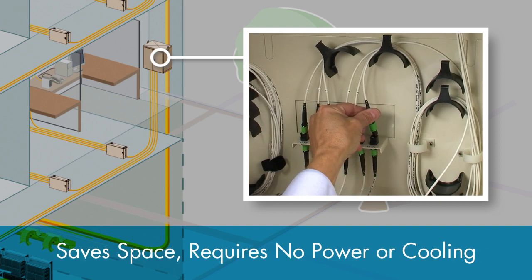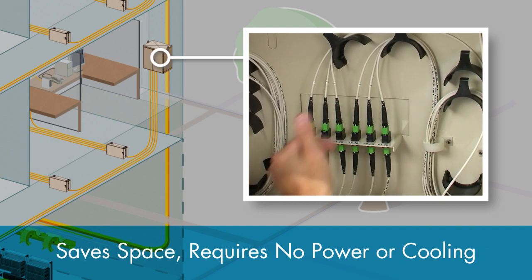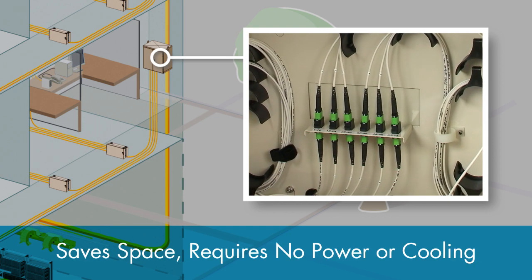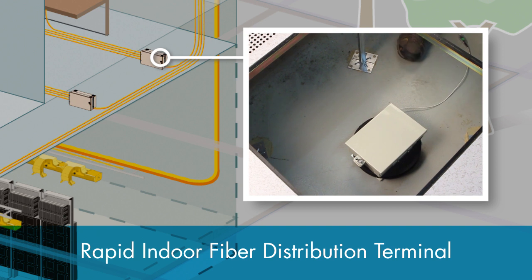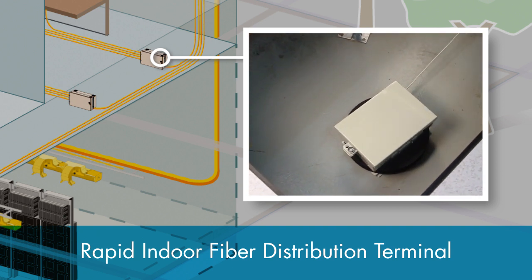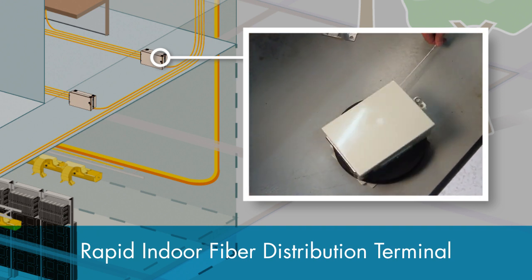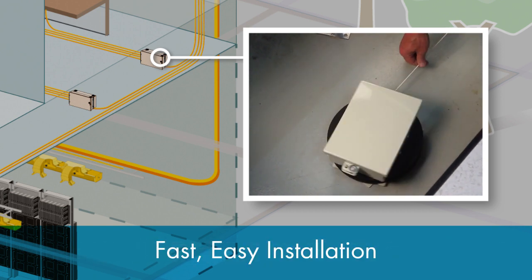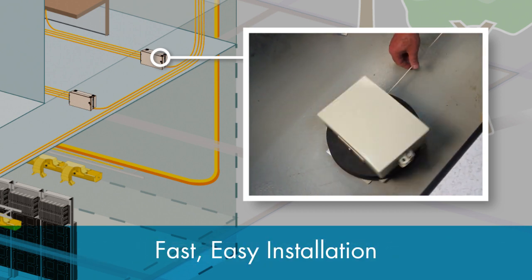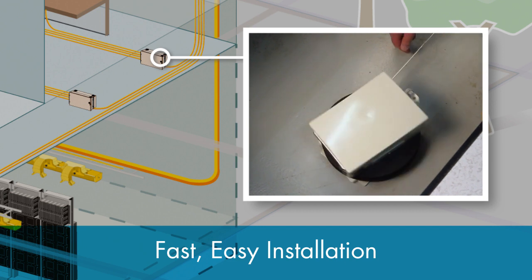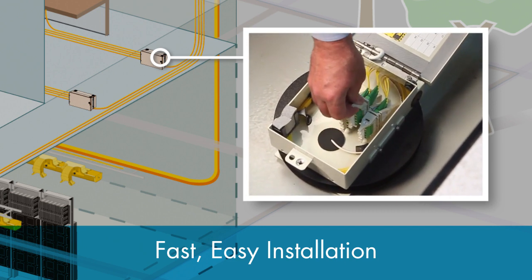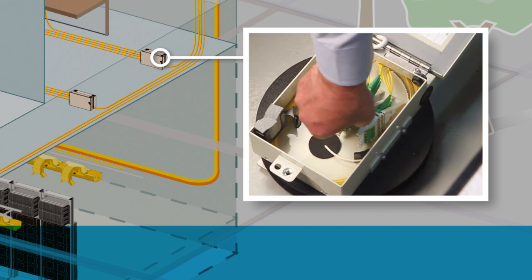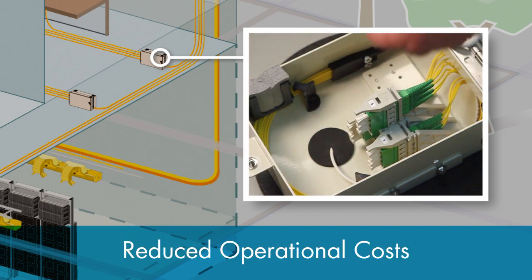It is also wall-mounted, which saves valuable floor space in the IDF telco closet and requires no power or cooling. Optical LAN installations use CommScope's Rapid Indoor Fiber Distribution Terminals, or IFDTs, as consolidation points. By integrating cable payout systems with fast unspooling of up to 300 feet of cable from a single 6-by-9-inch wall box, these IFDTs save even more physical space by eliminating the need for separate cable assemblies, splice cases and boxes.